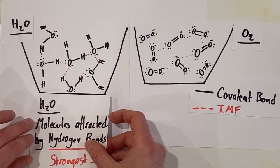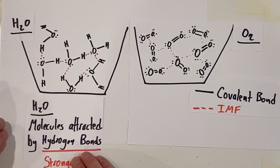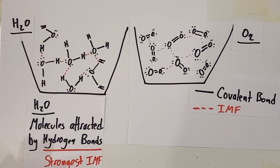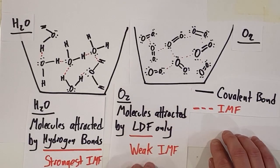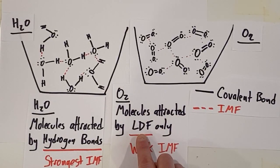Well we should know that H2O molecules are attracted by hydrogen bonds. Those are the strongest IMFs. While O2 molecules are attracted by London dispersion forces only. Those are the weakest IMFs.